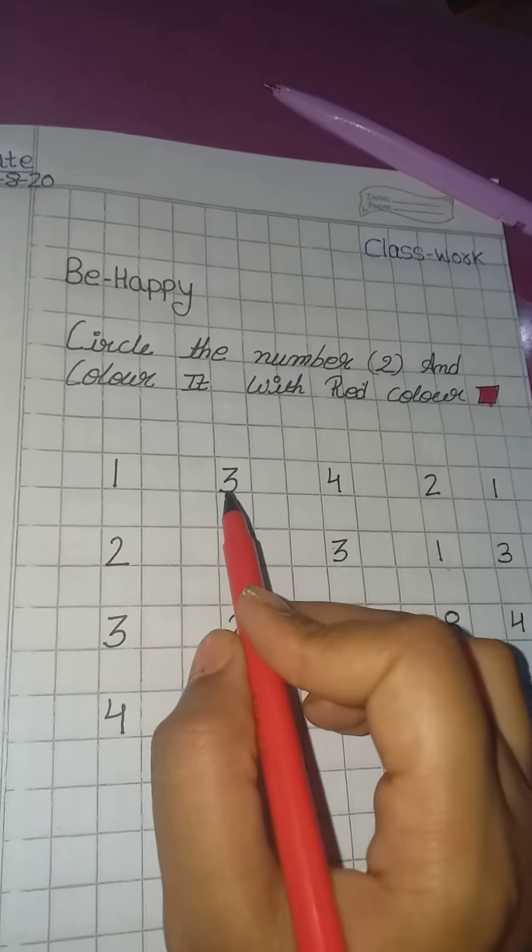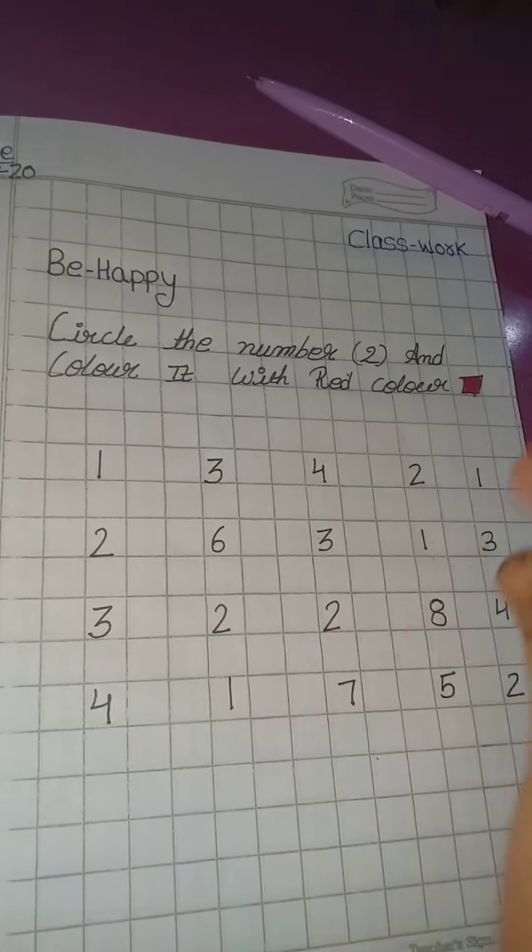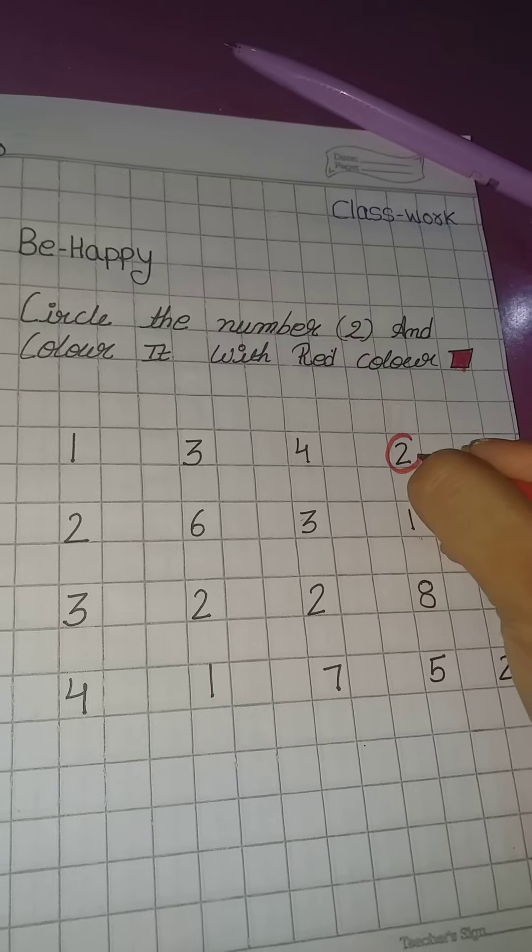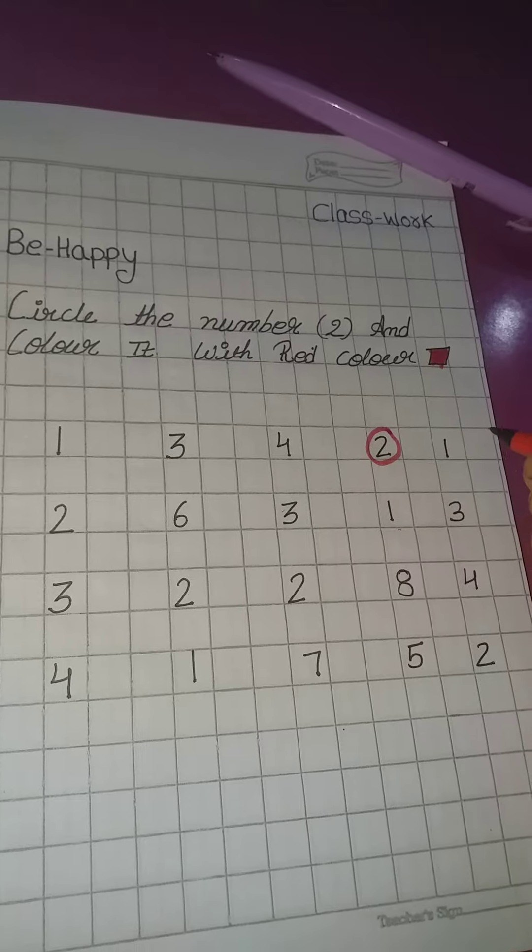This is 1. This is 3. This is 4. This is 2. 2 ko kya karna hai? Circle karna hai. Ishtaray sa circle karna hai. Aur iska inder color bhi karna hai aap loog ko.